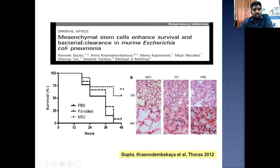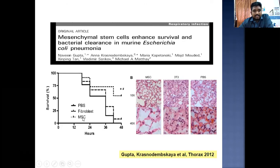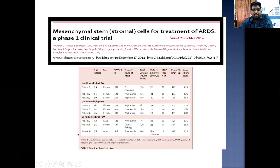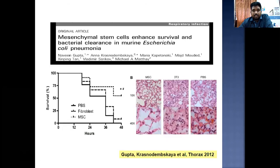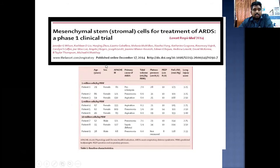Another original article on mesenchymal stem cells demonstrated enhanced survival and bacterial clearance in murine models of E. coli pneumonia, by Navin Gupta et al., published in Thorax in 2013. They compared fibroblasts, mesenchymal stem cells, and other therapies. The survival rate was much better in those receiving mesenchymal stem cells.